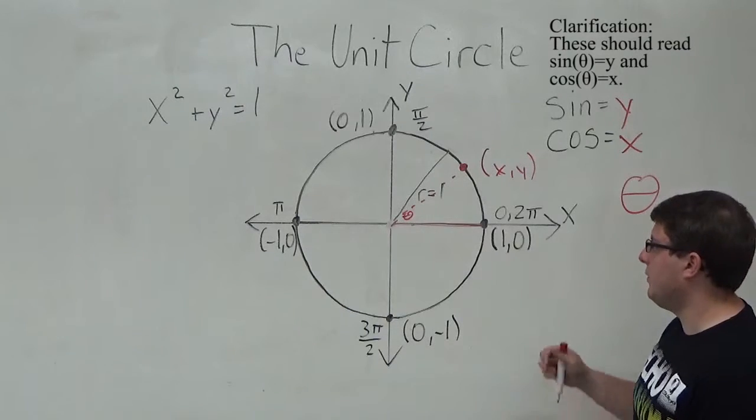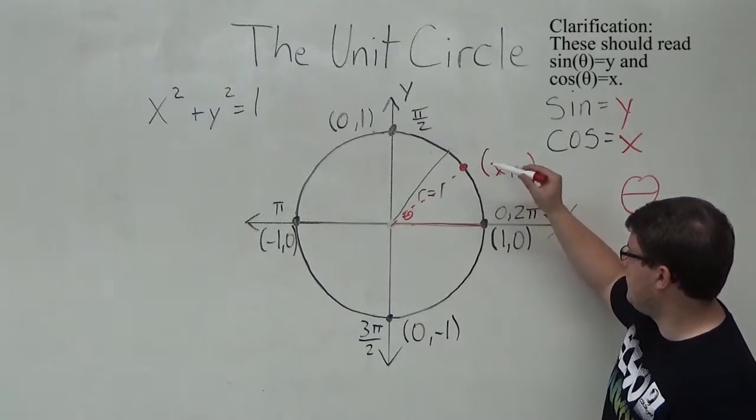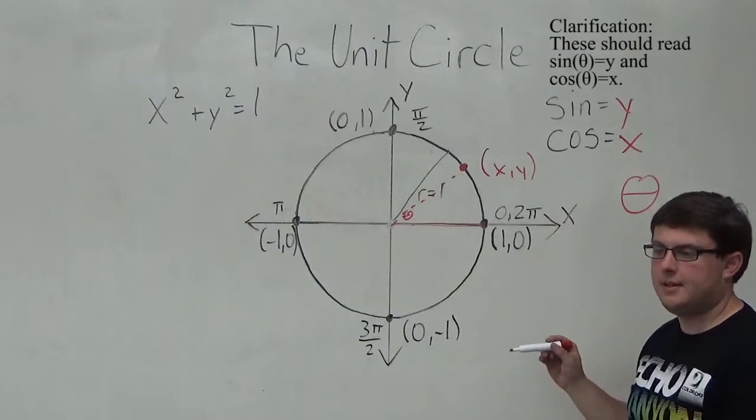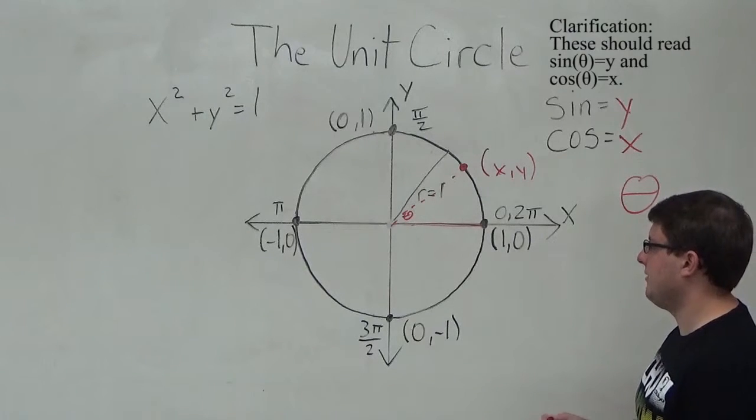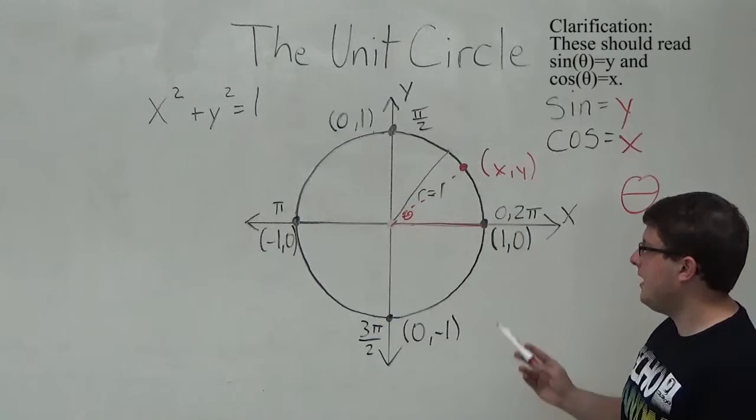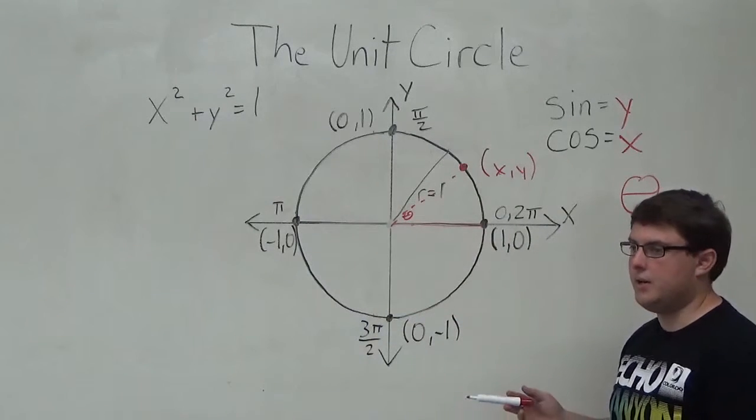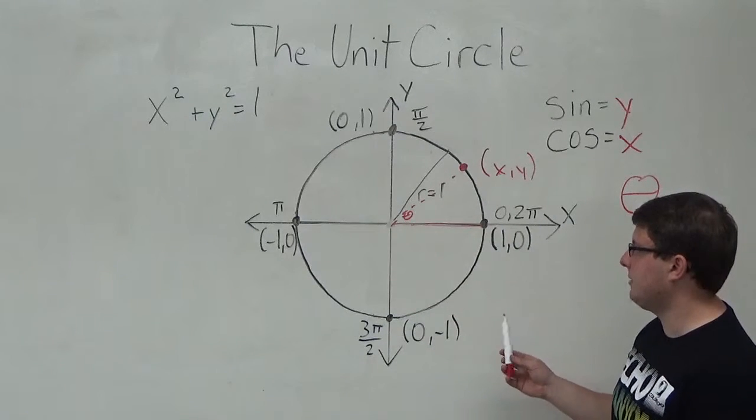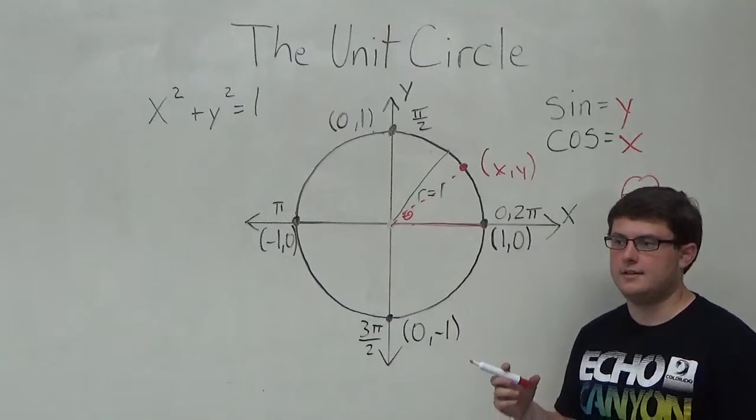For cosine, we know that in the first and fourth quadrants, we'll get a positive value because these are where x is positive. In the second and third quadrants, cosine will be negative because those are the negative values for the x-axis.